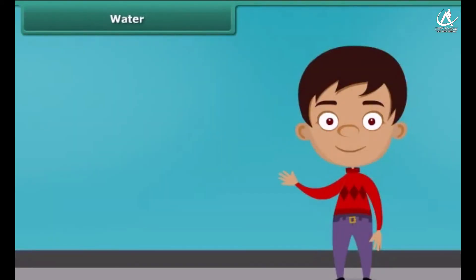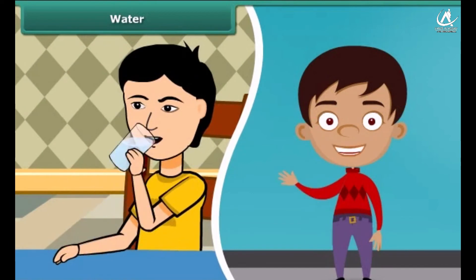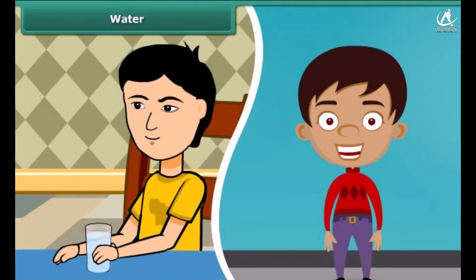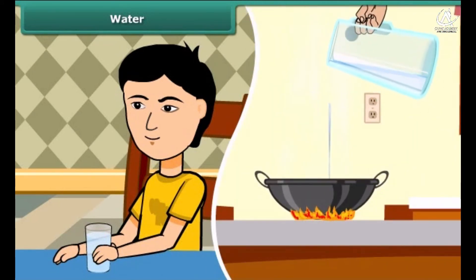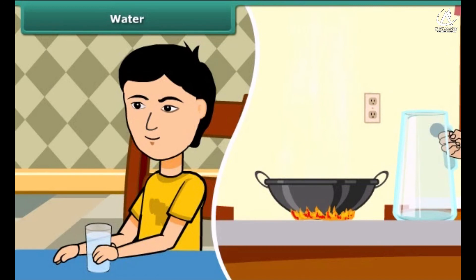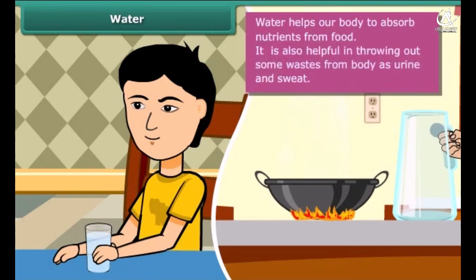Now let us know about water, which is also an important constituent of our food. Our body gets most of the water in the form of liquid. In addition, we also add water while cooking the food. Water helps our body to absorb nutrients from the food. It is also helpful in throwing out some wastes from the body as urine and sweat.